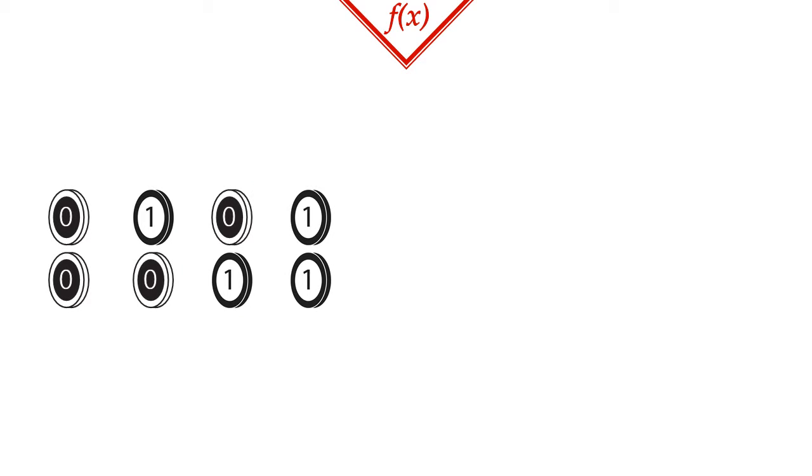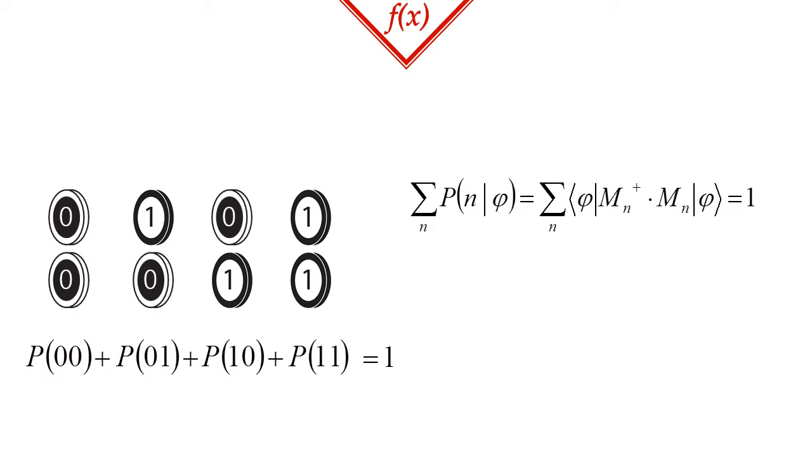Now, in a well-designed measurement, we expect to find one and exactly one outcome. This means that if we take the probability of all possible n outcomes, their sum has to be one. But this has to hold for every possible |φ⟩ state, which means that this is actually a property of the M_n matrices. In other words, if we take the sum of every M_n matrix multiplied by its conjugate transpose, then we get an identity matrix.